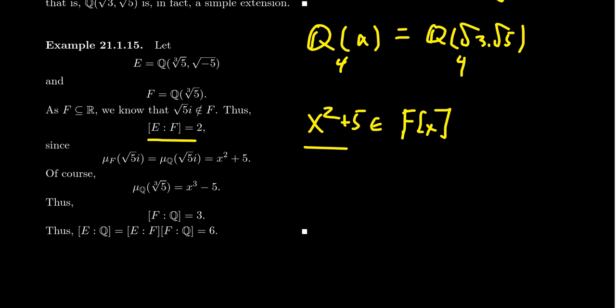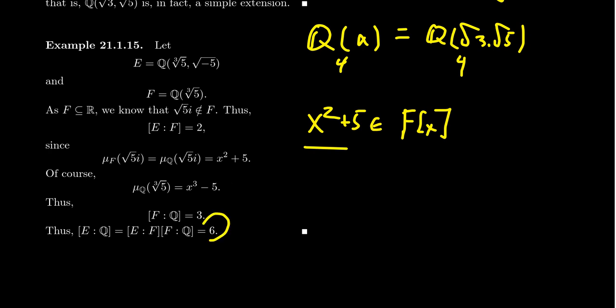Let E = Q(∛5, √(−5)). The minimal polynomial of √(−5) is x² + 5. This is irreducible over F because if it were reducible, it would have a root, meaning √(−5) would be an element of F — which it's not. So [E:F] = 2. For the cube root of five, its minimal polynomial as a rational polynomial is x³ − 5, giving [F:Q] = 3. By the degree factorization, [E:Q] = [E:F] · [F:Q] = 2 × 3 = 6. This factorization principle is very helpful in computing degrees of field extensions.